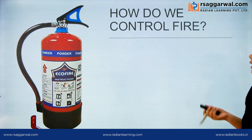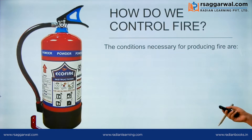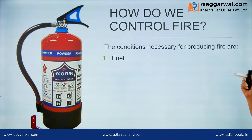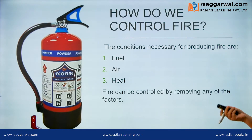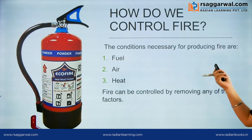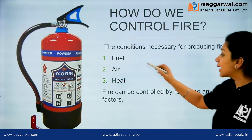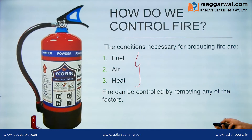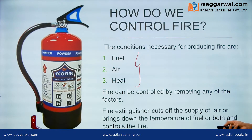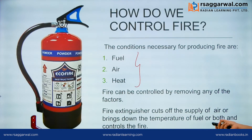How do we control fire? The conditions necessary are fuel, air, and heat. Fire can be controlled by removing any one of these three factors. If you remove one of the three, you can slowly control the situation. The work of a fire extinguisher is that it cuts off the supply of air and brings down the temperature of the fuel, and hence controls the fire.